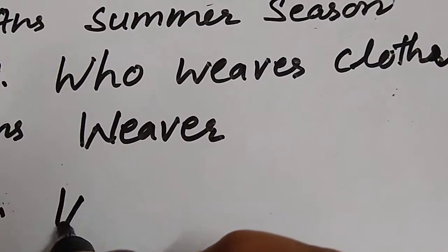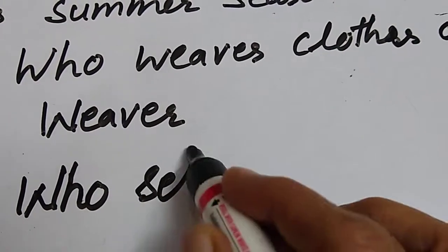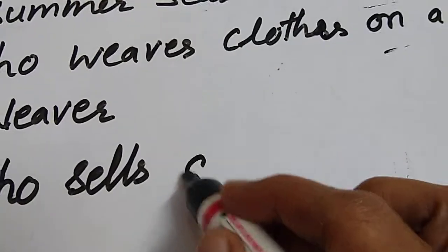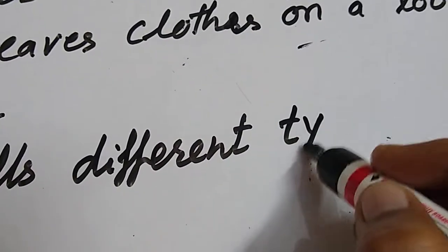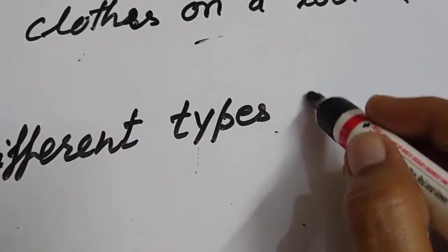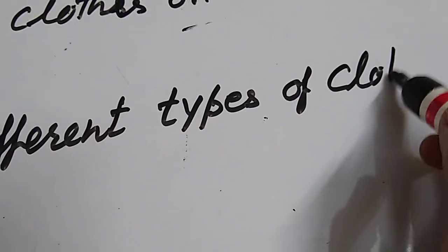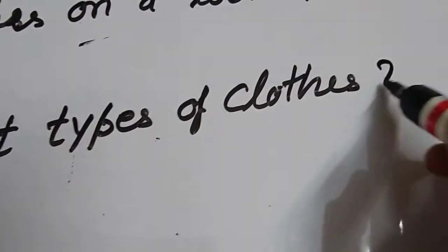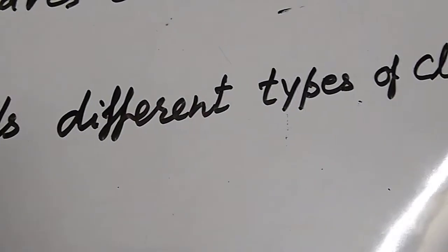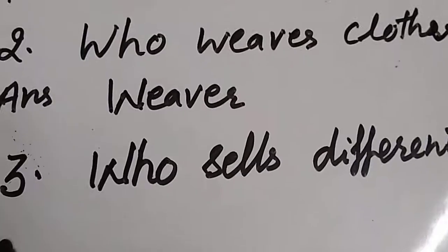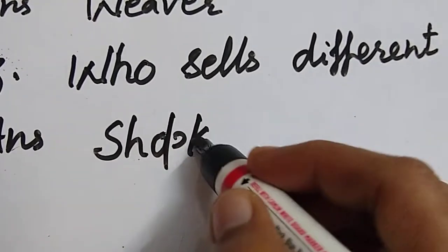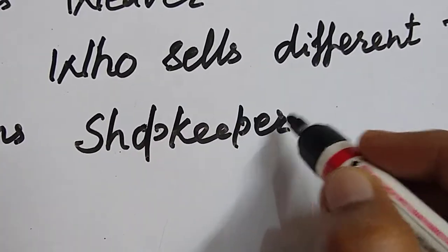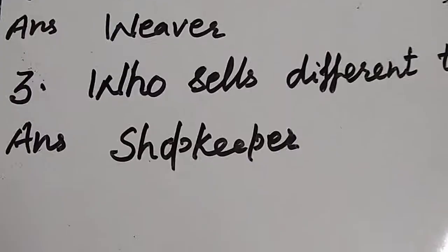Question number three: Who sells different types of clothes? The answer is 'shopkeeper.' When you go to buy clothes, you get them from the shopkeeper.